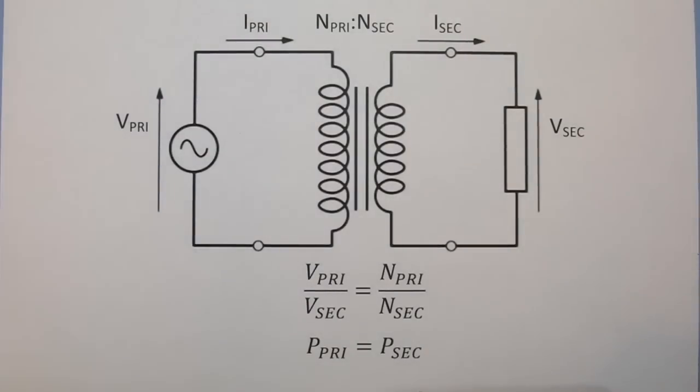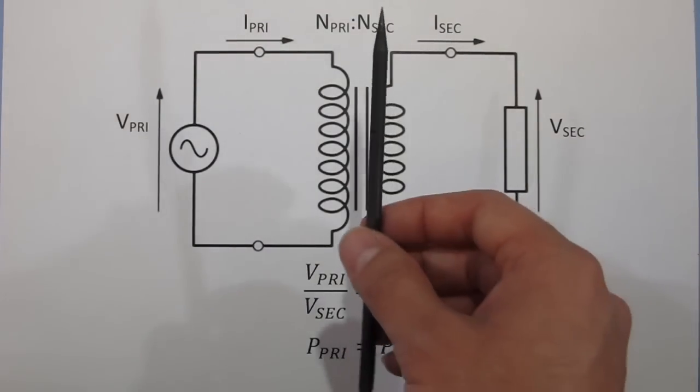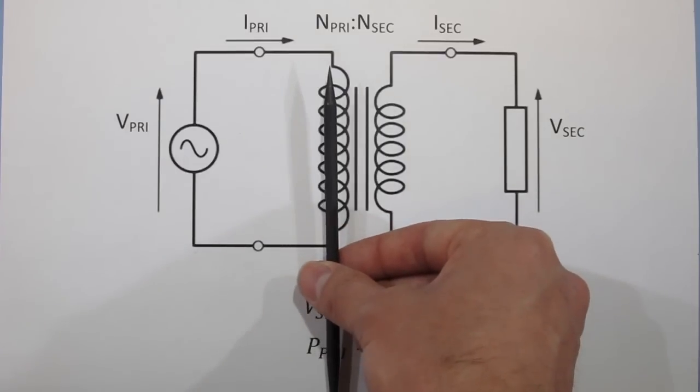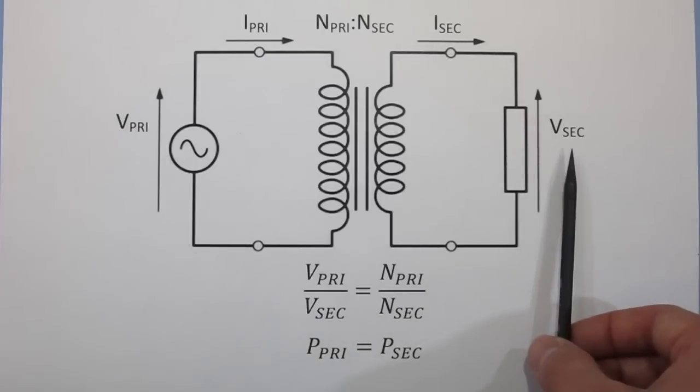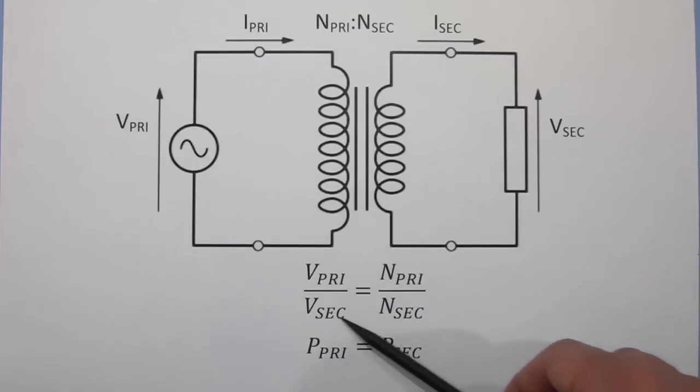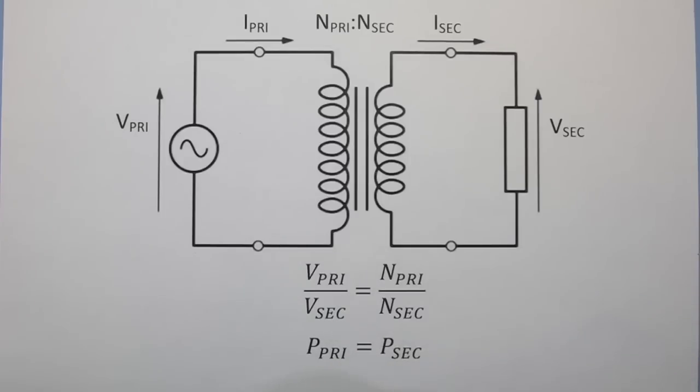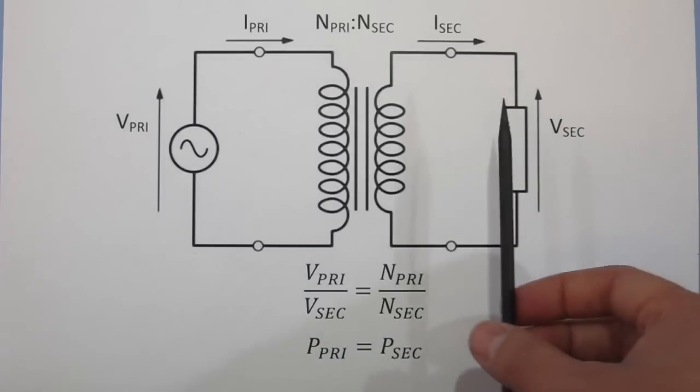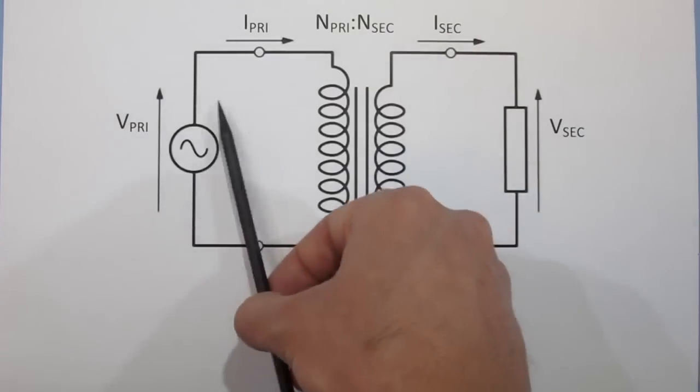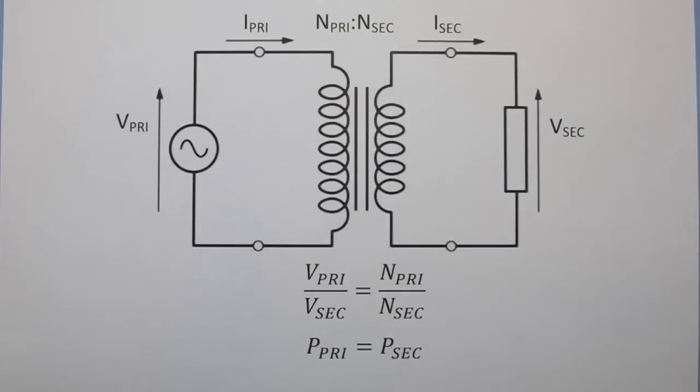Our second equation here shows that we are indeed obeying the laws of physics. If we have a transformer with twice the number of windings on the secondary as the primary, our secondary voltage would be twice the primary voltage. However, because power equals voltage times current and we can't destroy or create energy, if we draw one amp on the secondary, our primary voltage source would have to supply two amps.